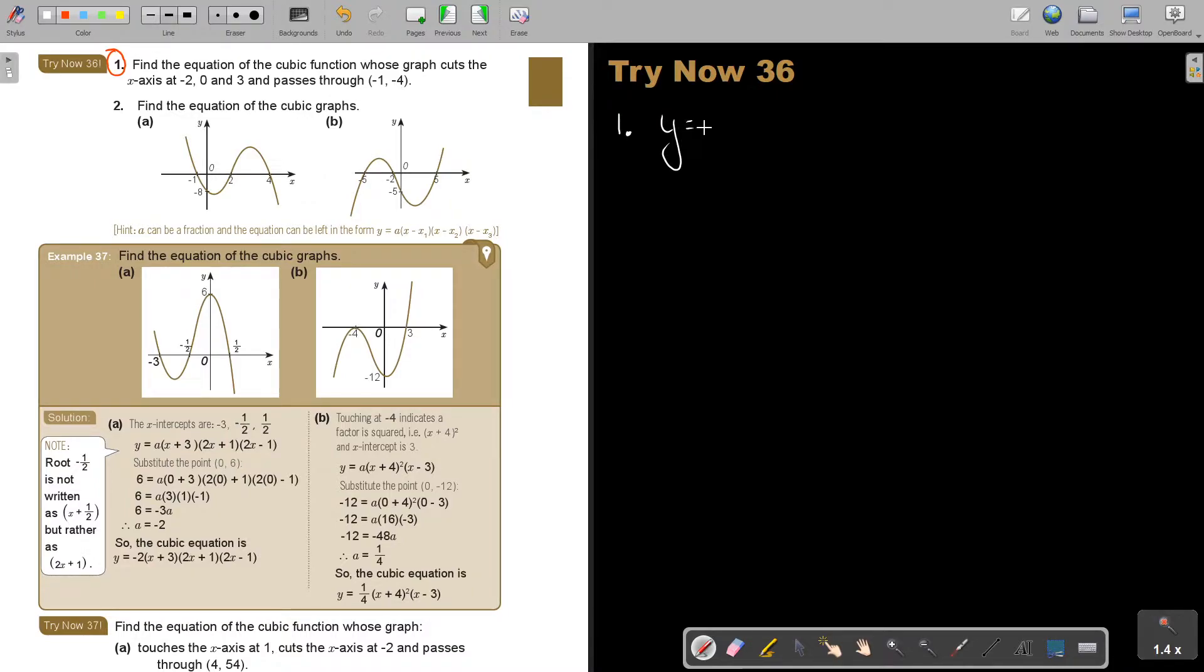Y is equal to a times x minus x1, x minus x2, x minus x3. Okay. So y is equal to a. Then it is x minus negative 2, x minus 0, x minus 3.